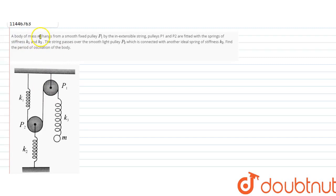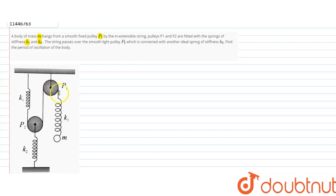This question states: A body of mass small m hangs from a smooth fixed pulley P1 by an inextensible string. Pulleys P1 and P2 are fitted with springs of stiffness K1 and K2. This is our small m, and there is a string attached to the spring connected to P1. The string is also attached to P2, which is connected to the ground by a spring of stiffness K2.